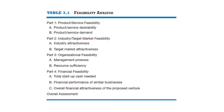In industry/target feasibility, we check industry attractiveness and target market attractiveness. An industry is attractive when it is young, not crowded, and growing constantly. An attractive target market is one that is large enough for the proposed business but small enough to avoid attracting larger competitors.